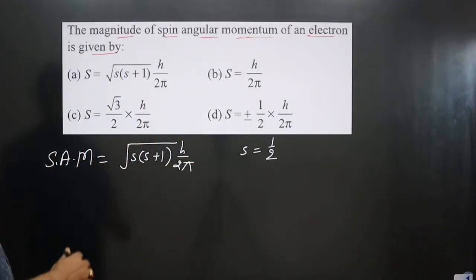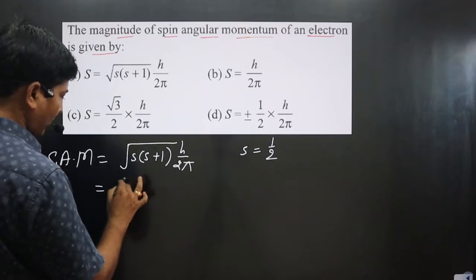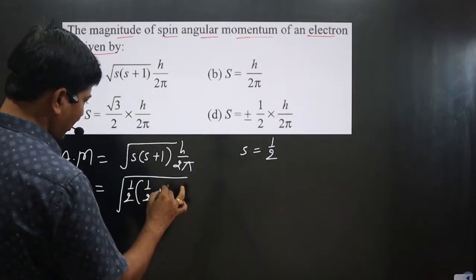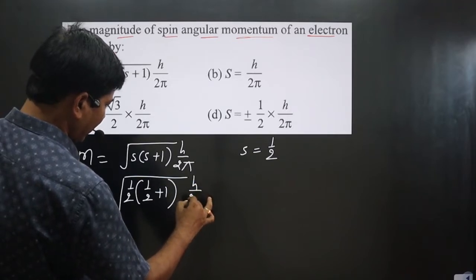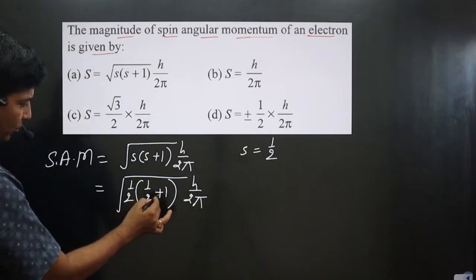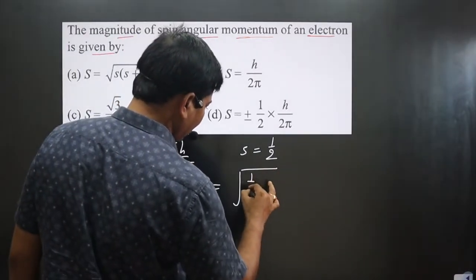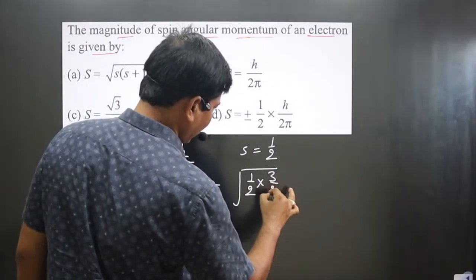Now we can plug in the values for an electron. We have √[1/2(1/2 + 1)] × ℏ/(2π). One-half plus one equals three-halves, so we can write √[1/2 × 3/2] × ℏ/(2π).